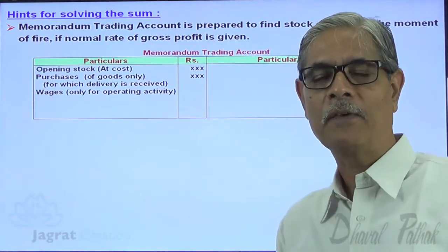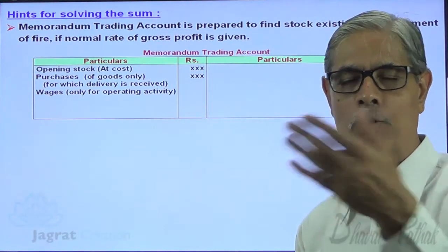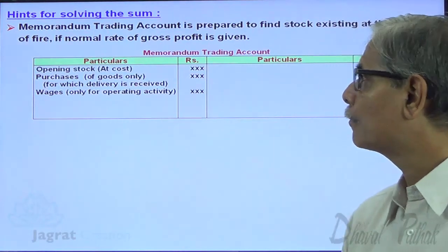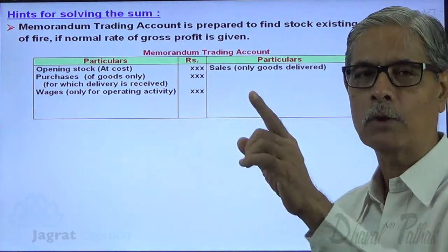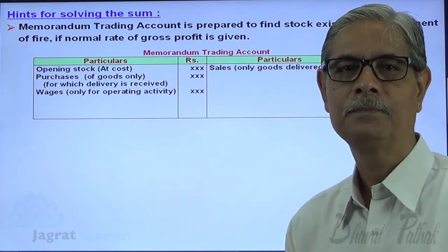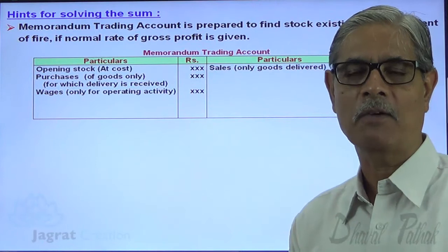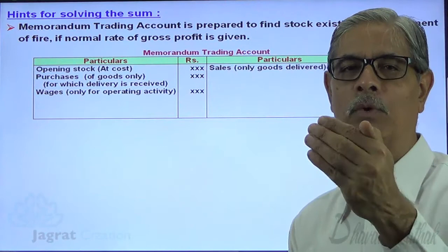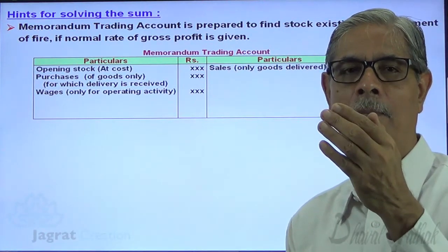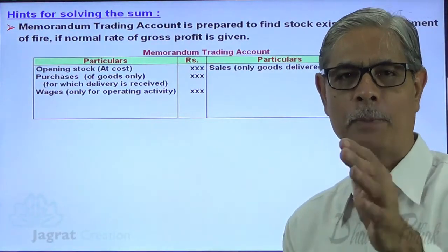We are required to record wages for operating activity only — if machinery installation charges are included in wages, they should be removed. We are required to write down sales — only those sales for which goods have been delivered and for which the normal rate of gross profit is earned. If any amount given at cost is included in sales, it should be removed and recorded separately or deducted from purchases.